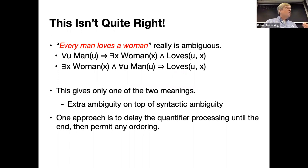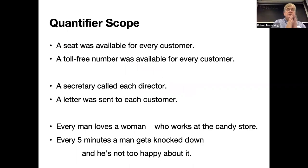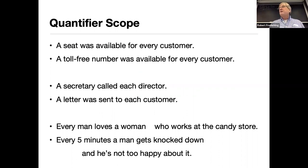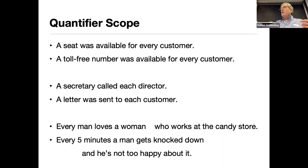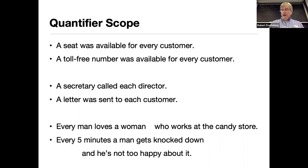It's also possible that there is some woman who's really popular and every man loves that person — that's a completely legitimate other reading. People automatically get the right scoping on the quantifier based on meaning. If you say 'a seat was available for every customer,' you don't think there's one chair everyone is sharing. But if you say 'a toll-free number was available for every customer,' you know there's one number they're all using. There are two different scopings of the same sentence, and you just know which one's right.